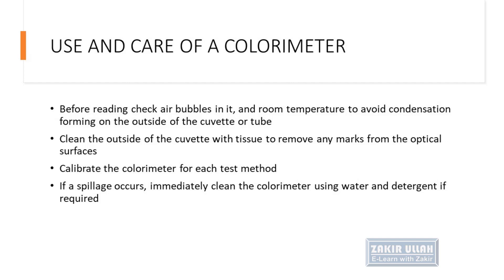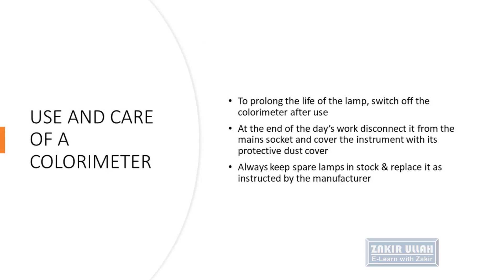Before reading the absorbance of any solution, check for air bubbles and avoid condensation forming on the outside of the tube or cuvette. Clean the outside surfaces of the cuvette with tissues to remove marks from optical surfaces. Calibrate the colorimeter for each test. If there is any spillage, clean it immediately using water and detergent if required. For prolonged lamp life, switch off the colorimeter after use and disconnect it from the main socket at the end of the day.